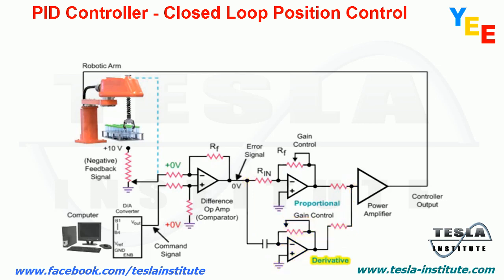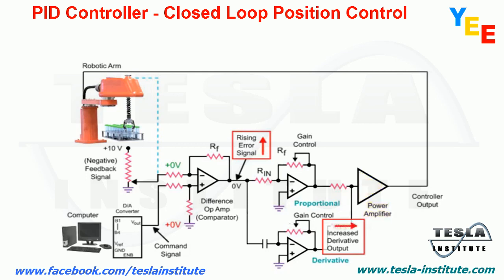The derivative amplifier produces an output while the signal applied to the amplifier's input is changing. As the arm lags behind the command signal, the error signal generated causes the derivative amplifier to produce a voltage that adds to the output of the proportional amplifier. The sum of both voltages is applied to the power amp, which results in the robotic arm accelerating at a similar rate of the changing command signal.